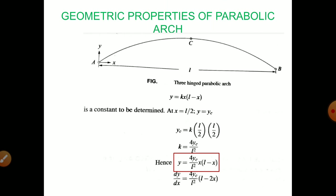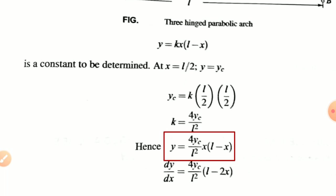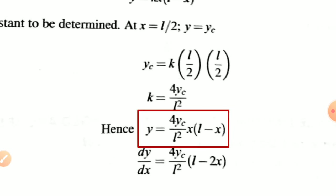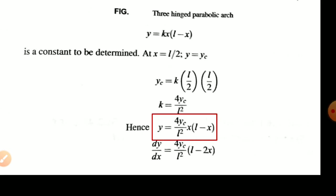Now, the geometric properties of parabolic arcs. For a parabolic arc, you are required to find the height of the section. Y is equal to K into X into L minus X, where K is the constant to be determined with the relevant boundary conditions. At X equal to L by 2, Y is equal to YC, that is the height of the crown. Therefore, YC will be equal to K into L by 2 into L by 2, that is, K is equal to 4YC by L squared. Hence, Y will be equal to 4YC divided by L squared into X into L minus X. DY by DX equals 4YC divided by L squared into L minus 2X. Thank you.